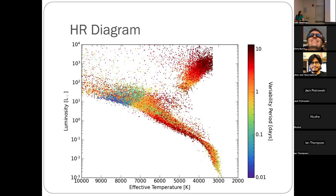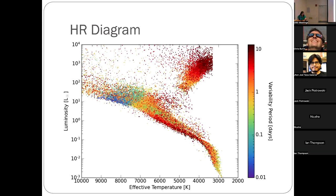A question: does variability period refer to the most significant period in the analysis? Yes. For one-sign it's the only one. For two-sign, I'm selecting the most significant period — it doesn't change much since the one-sign category has the most stars, two-sign has maybe 6,000 out of 50,000, and the ACF has fewer than 1,000. We're keeping it simple — this is the most significant period from the time series photometry, as opposed to spectroscopy.